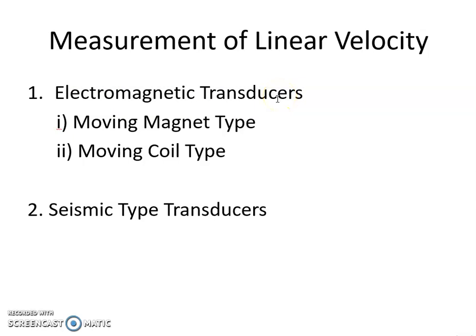An electromagnetic transducer utilizes the voltage produced in a coil on account of change in flux linkages resulting from change in reluctance. This is the most commonly used transducer for the measurement of linear velocity. Let us discuss the two types: moving magnet type and moving coil type.